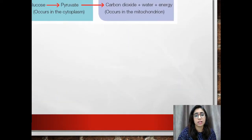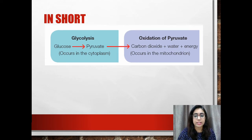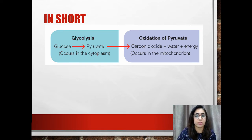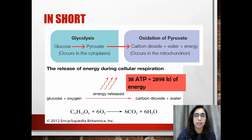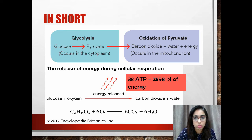In short, glycolysis and the oxidation of pyruvate are both important in aerobic respiration. Glycolysis occurs in the cytoplasm and the oxidation of pyruvate occurs in the mitochondria. Glucose is broken down into pyruvate, and then into carbon dioxide, water, and energy. The energy released is equivalent to approximately 2,898 kilojoules per mole — that is, 2,898 kJ of energy released when one mole, or 180 grams, of glucose reacts with oxygen.